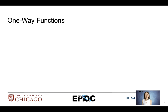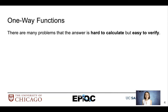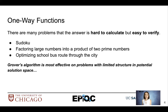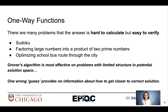We'll dive a little bit more in depth with one-way functions. There are many different types of problems that have the characteristic of being hard to calculate but easy to verify. Sudoku, factoring, and optimization all fall into this category. Grover's algorithm is efficient at solving these types of problems, especially because they have limited structure. When there's limited structure in the solution space, one wrong guess doesn't necessarily give you any information about what the correct answer is.